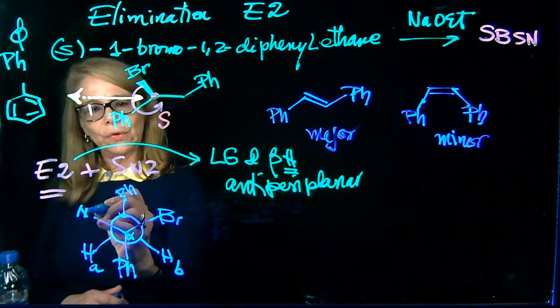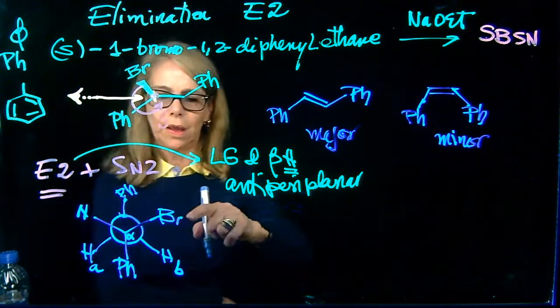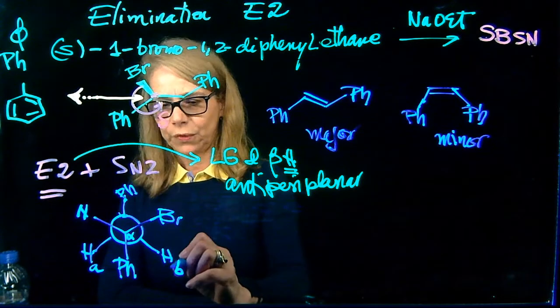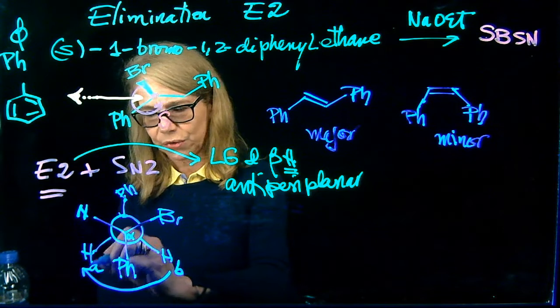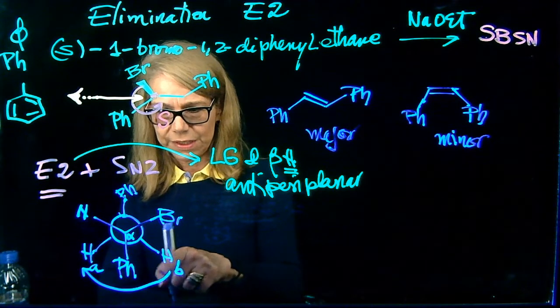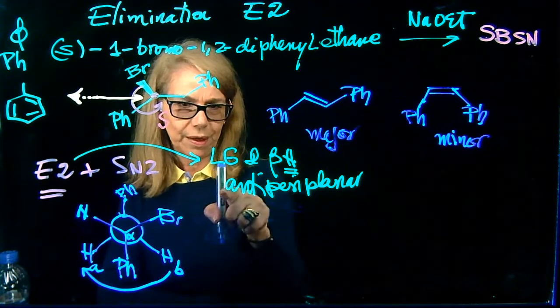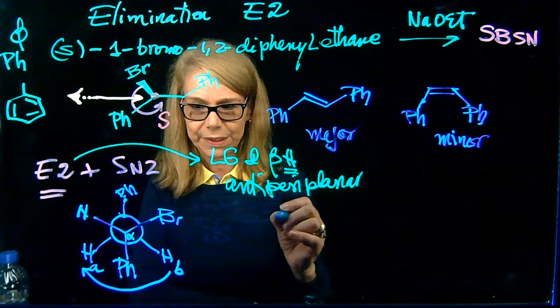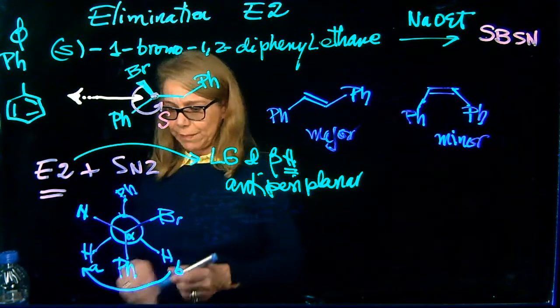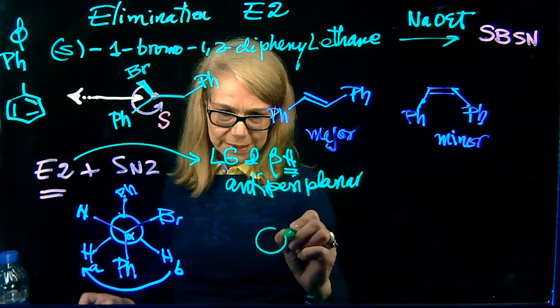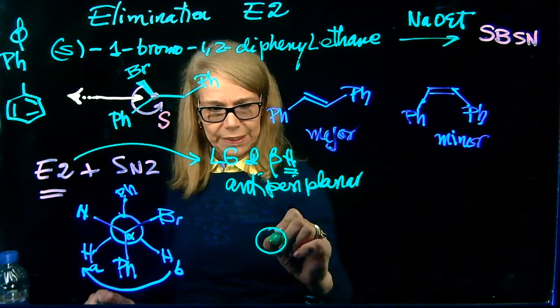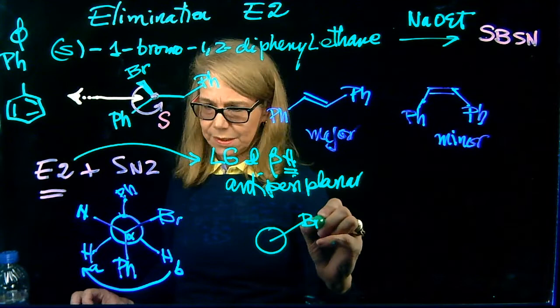So let's see what we need to do now to form the other product. What I'm going to do is to rotate the carbon in the back, generate another Newman structure in which this hydrogen is going to be opposite to the bromine, so that they are anti-periplanar. So another drawing. In the other drawing, doing the rotation I just explained,